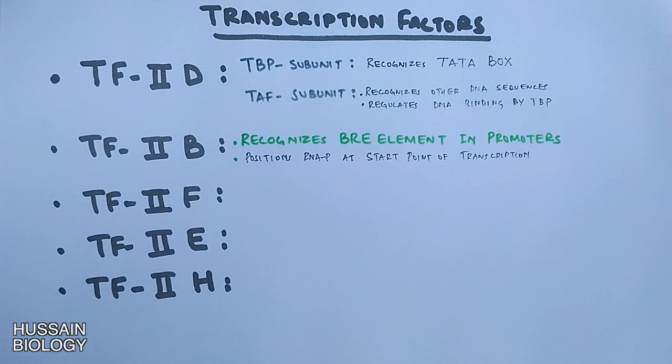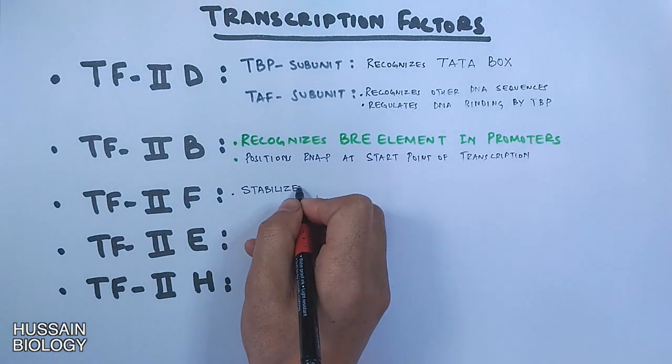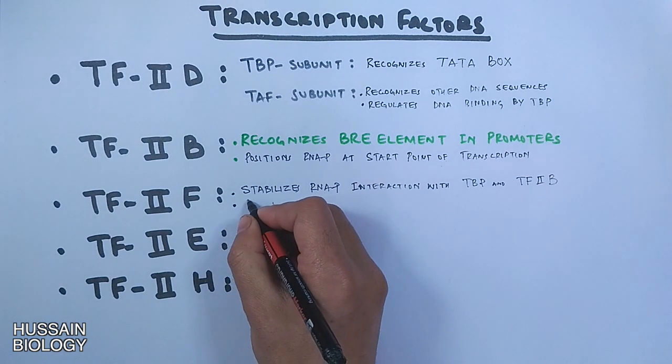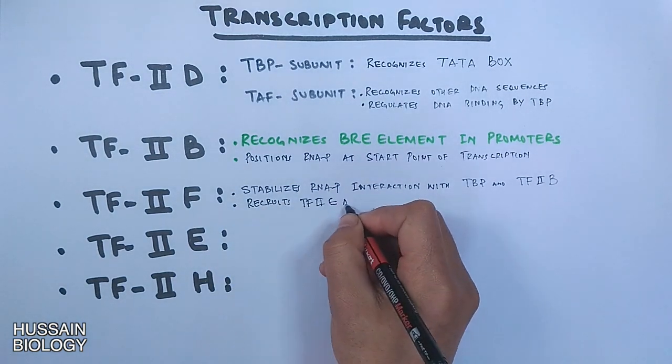Then we have transcription factor 2F. This transcription factor stabilizes RNA polymerase interactions with TBP and transcription factor 2B, and it also recruits transcription factor 2E and H.